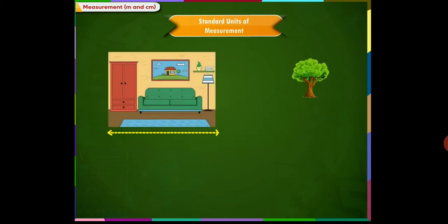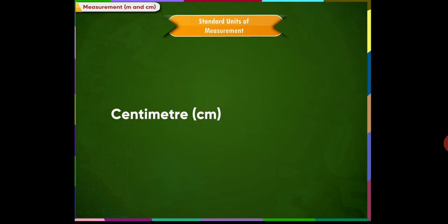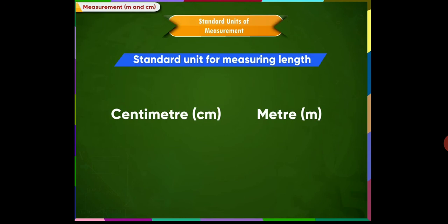Length of a room, height of a tree, length of cloth, height of an electric pole, etc. are slightly bigger lengths which are measured in meters. Meter is a unit which is used to measure bigger lengths. In short, meter is written as m. The units centimeter and meter are used as standard units of measuring length.